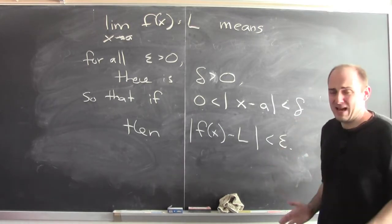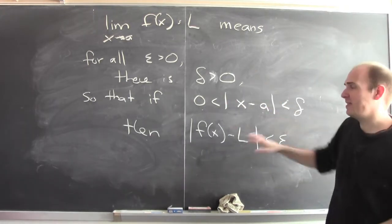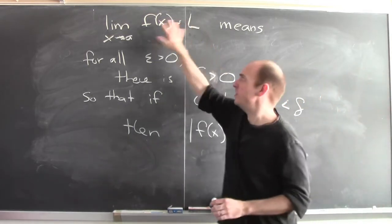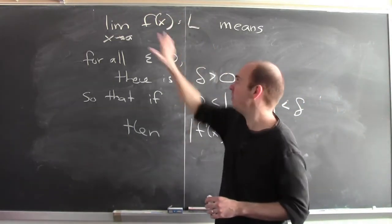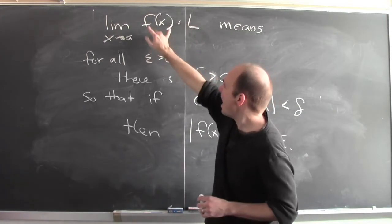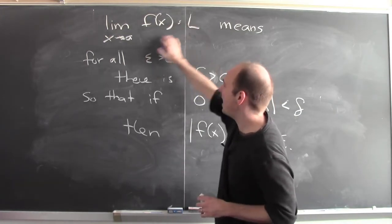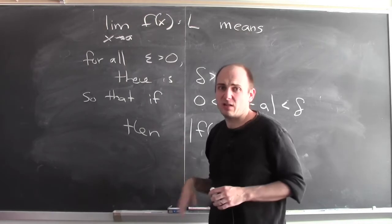When you say it like that, I think it's really hard to see how this has any relationship to a more intuitive description of this limit statement. What's this trying to get at? It's trying to say f(x) is as close as I want to L by making x sufficiently close to a.